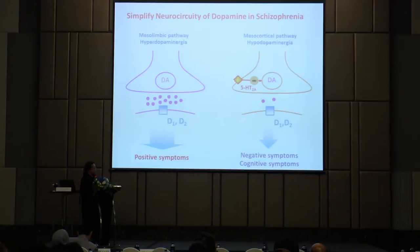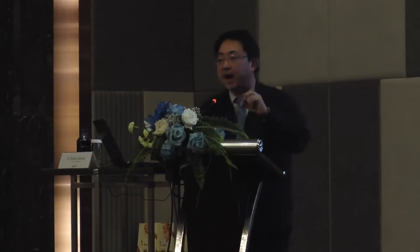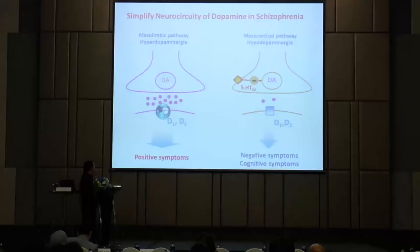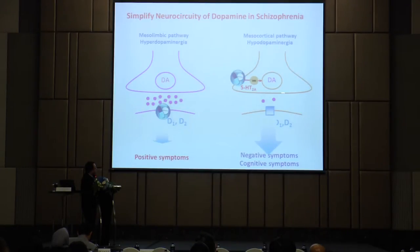One receptor we are interested in is the serotonin-2A receptor, which is an autoreceptor at the presynaptic terminal. If you stimulate this receptor, it will inhibit dopamine release. So the target of antipsychotics is that every agent acts at two receptors: first, at the D2 receptor at the postsynaptic level to decrease stimulation on the limbic area and improve positive symptoms; and second, blocking the serotonin-2A receptors can increase the amount of dopamine at the synapse, improving negative and cognitive symptoms.